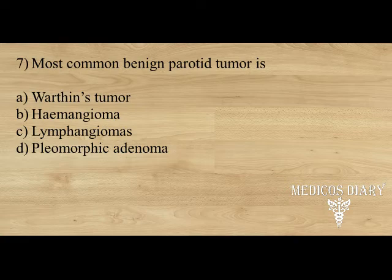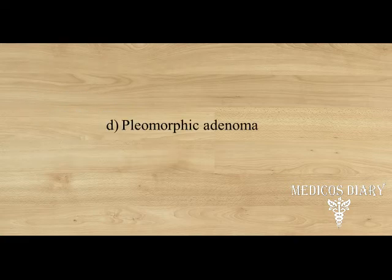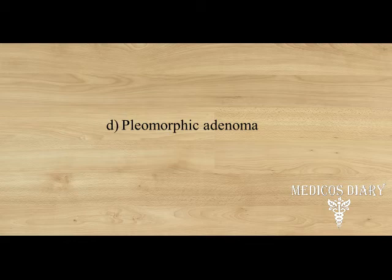Answer: Option D — Pleomorphic adenoma. Pleomorphic adenoma is the commonest tumor of the major salivary glands. It can arise from the parotid, submandibular, or other minor salivary glands. These are slow-growing tumors, usually seen in the third or fourth decade, more common in females. They are also called mixed tumors because both epithelial and mesenchymal elements are seen on histology.